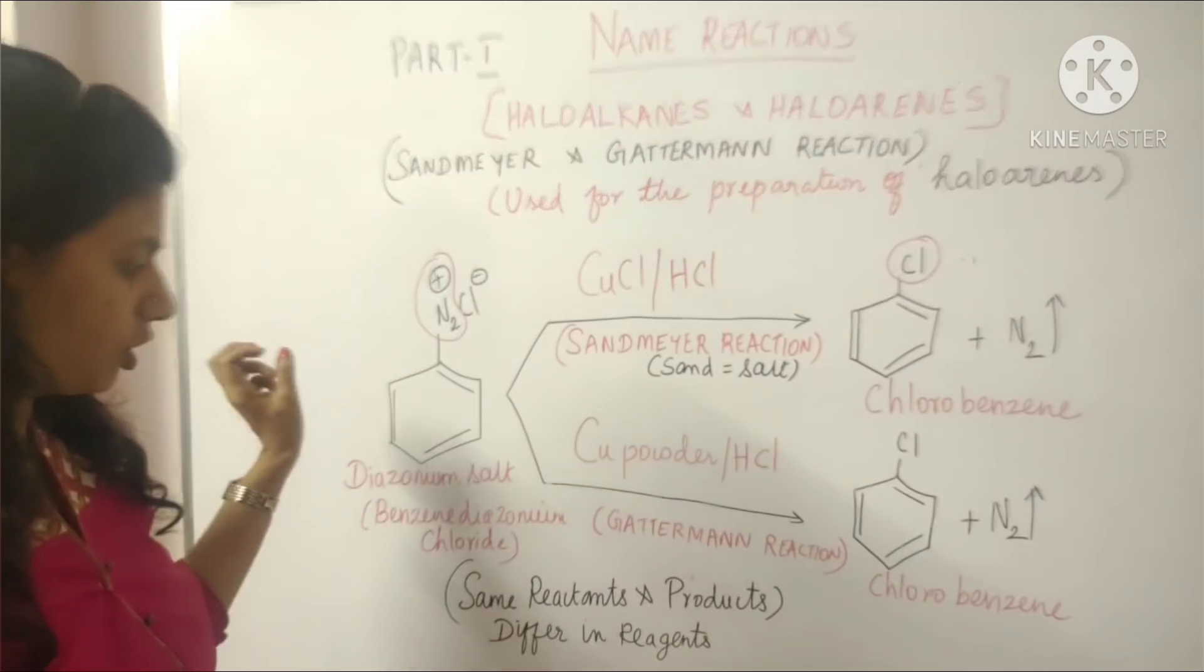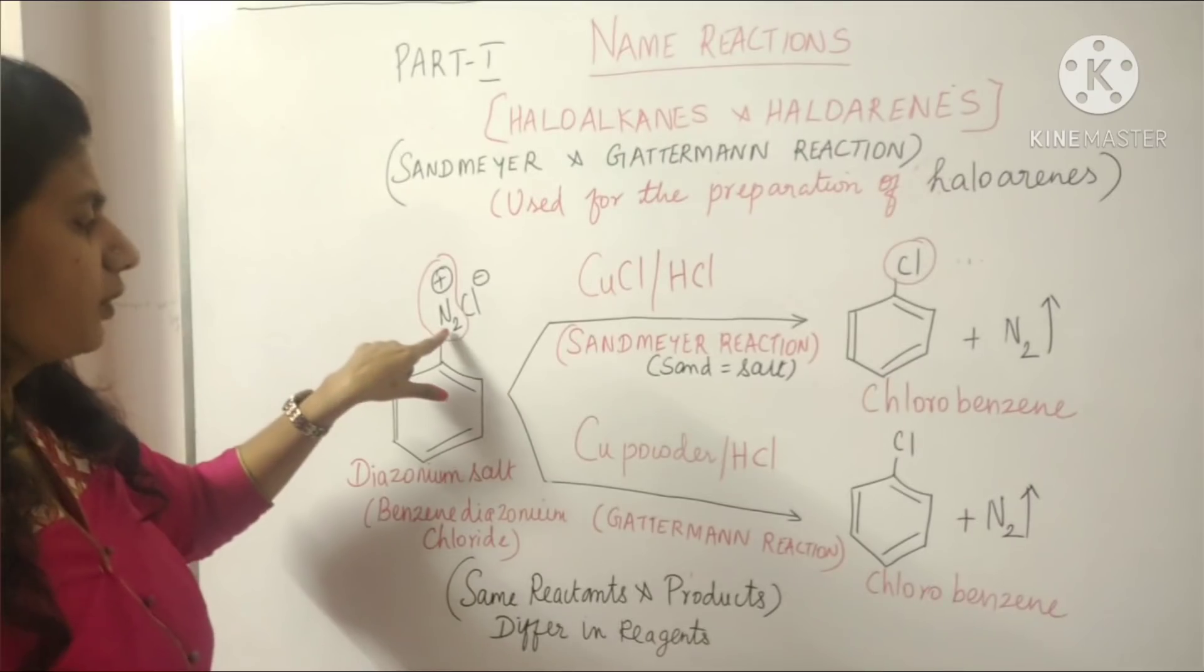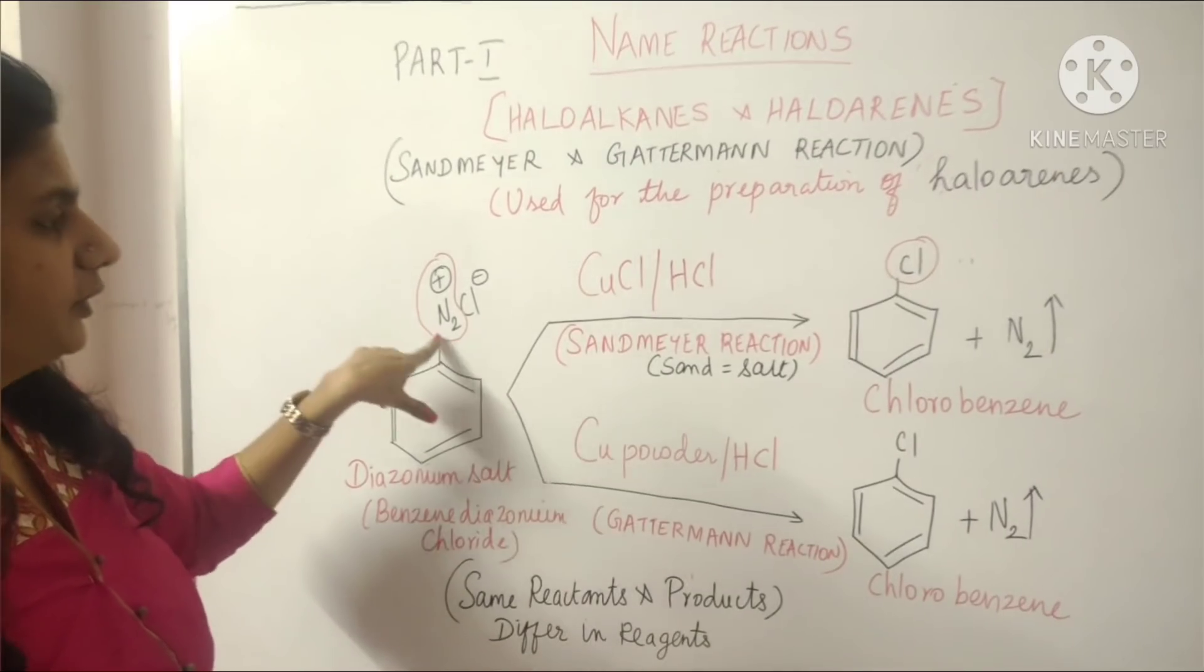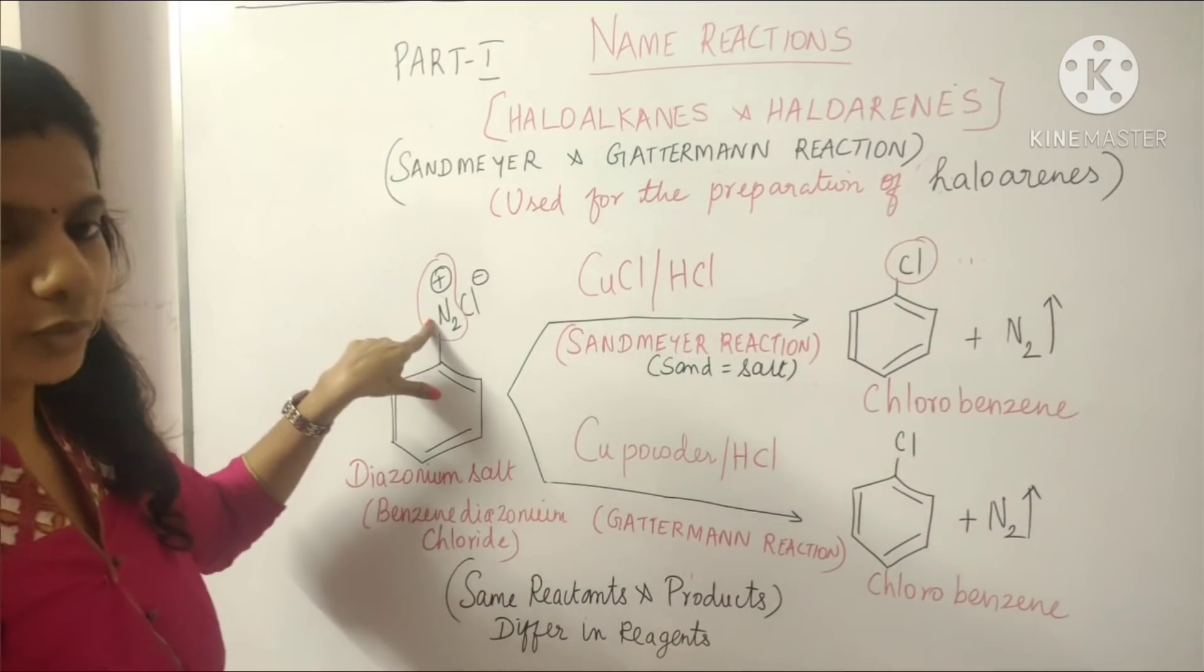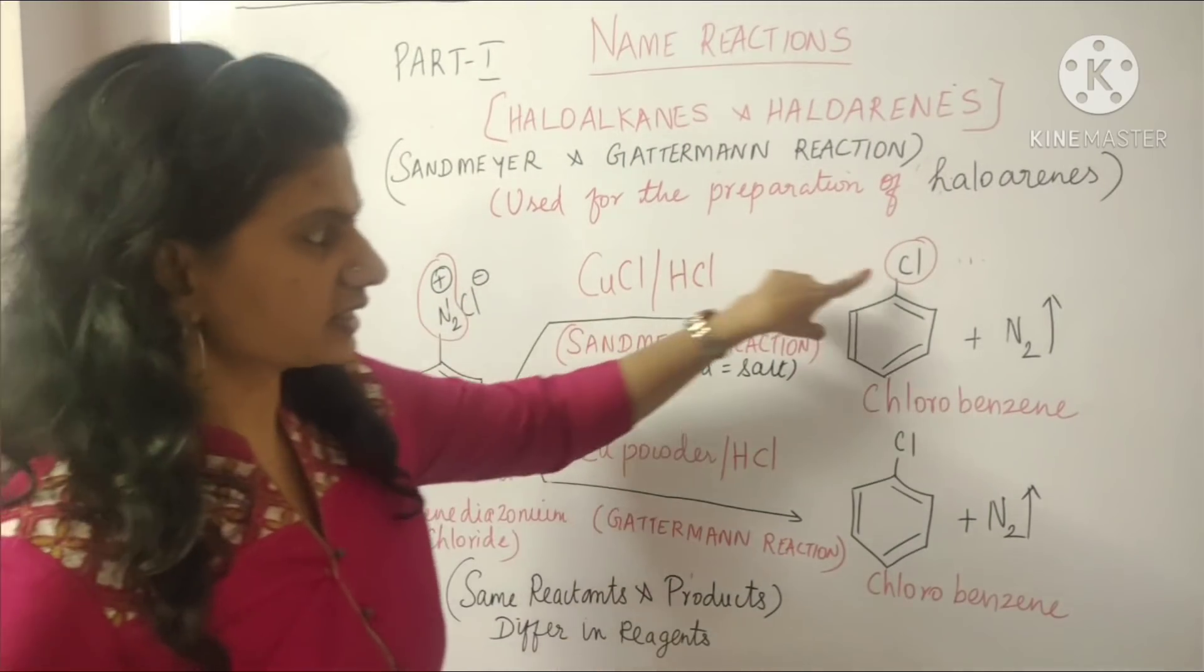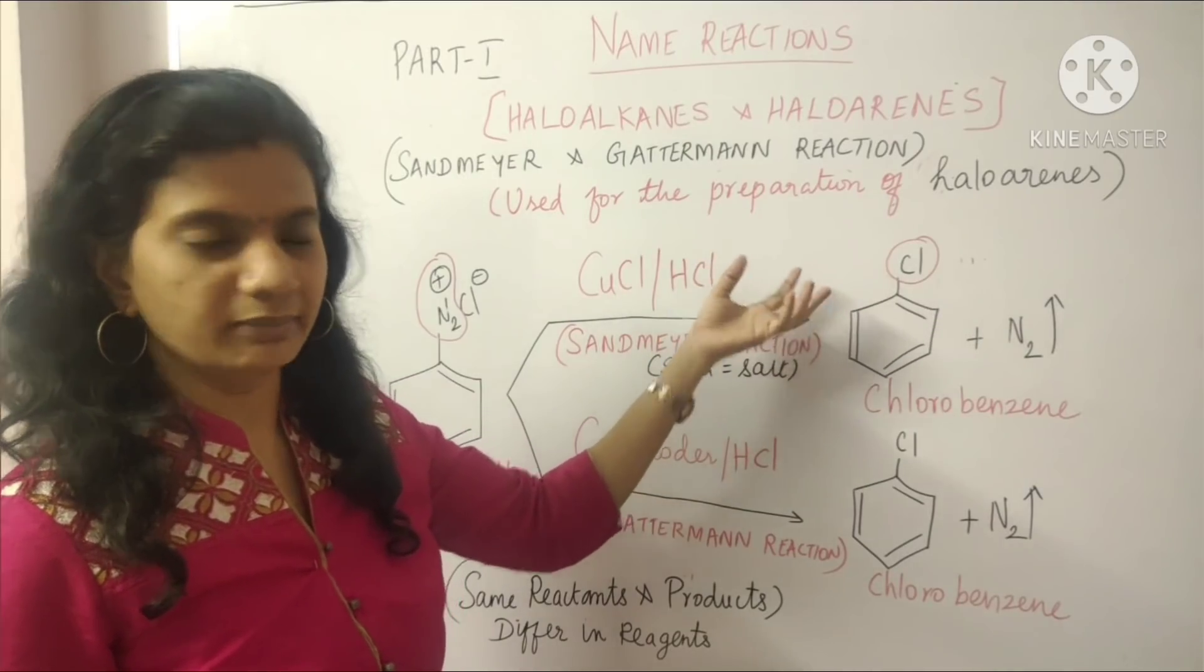We are taking this diazonium salt, that means benzene diazonium chloride. So what is happening here? I wrote N2 here, right? In the presence of cuprous chloride, what is happening? This diazonium group is replaced by this halogen group. It may be chlorine or bromine or iodine, whatever it may be.